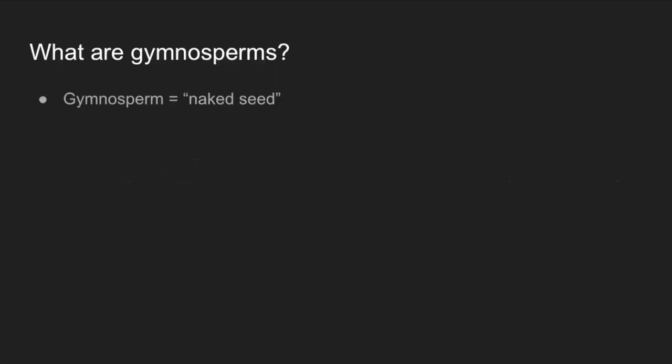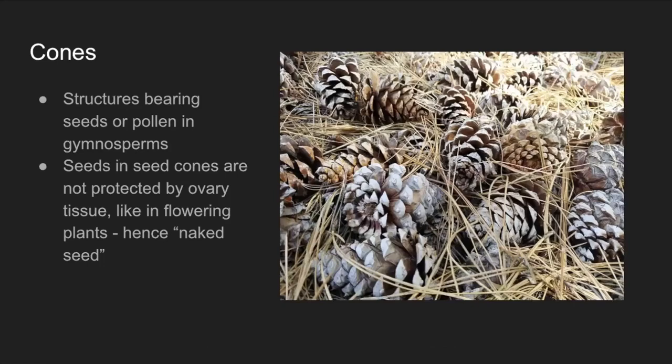So what are gymnosperms? The word gymnosperm itself means naked seed. This refers to how the seeds are presented in the cones of these plants. Cones are structures that bear either seeds or pollen. Seed cones, like these familiar pine cones, bear seeds in between individual seed scales. The seeds are not protected by ovary tissue like in a flowering plant — if you think of a fruit like a blueberry or a pear, you have seeds surrounded by fleshy tissue. This doesn't happen in gymnosperms, hence the naked seed aspect.